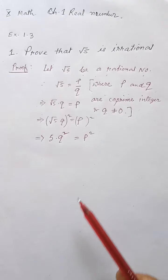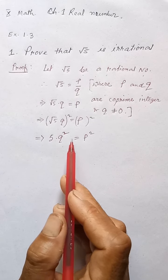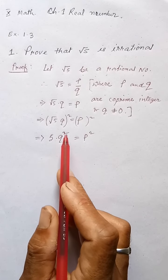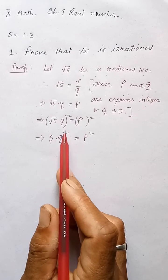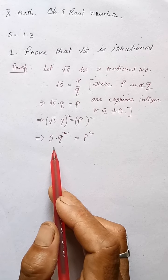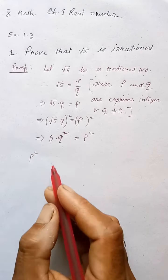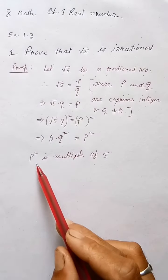Now observe the P² value on the left side. It is a square number, and it is equal to 5 times something, which means it is a multiple of 5. So we can say that P² is a multiple of 5, or equivalently 5 divides P².